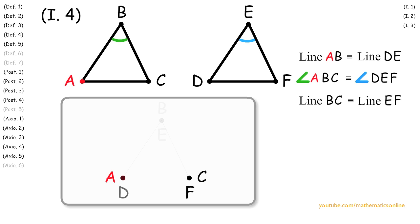Now since we know that points A and D also coincide, then we can use Axiom 4 to show that line AC must be congruent to line DF.